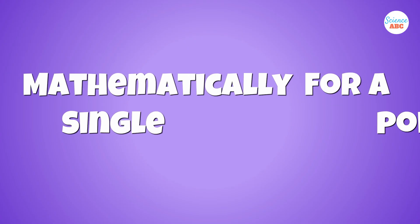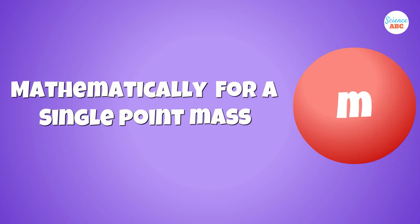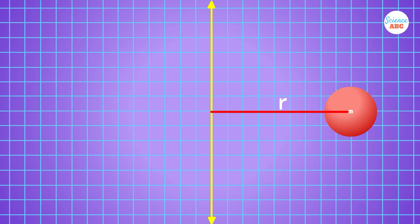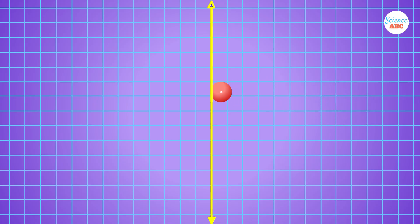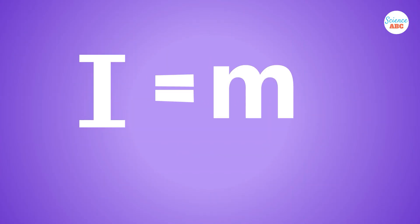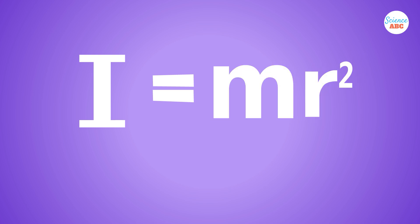Mathematically, for a single point mass m rotating at a distance r from the axis of rotation, the moment of inertia I is given by I = mr². As you can see from this equation, the moment of inertia increases linearly with mass, but quadratically with the distance from the axis.